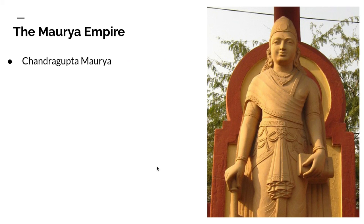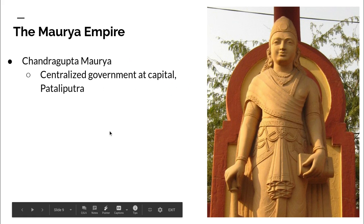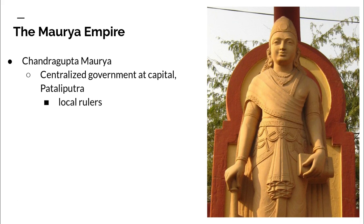So how did he rule? Chandragupta had a centralized government at the capital. A centralized government means that everything came from the capital — that's where the center of government was. He had local rulers in different areas as supervisors who reported to him, so every decision made by government came from Chandragupta. He had these local rulers in place as a way of being more organized.